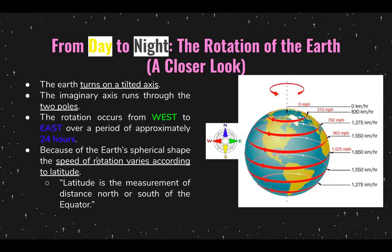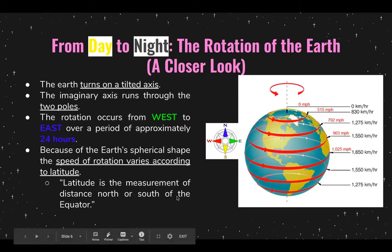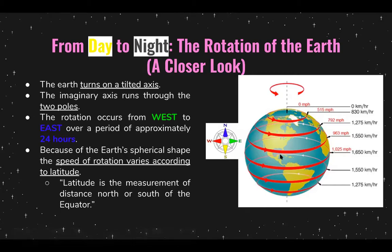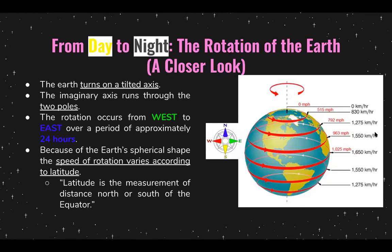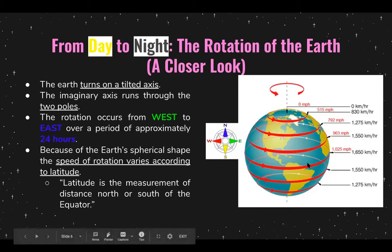Because of the Earth's spherical shape, the speed of the rotation varies according to the latitude. The latitude is the measurement of the distance north or south of the equator. So as the latitude is increasing — as we go up — the speed is decreasing. Take some time to look at that image.